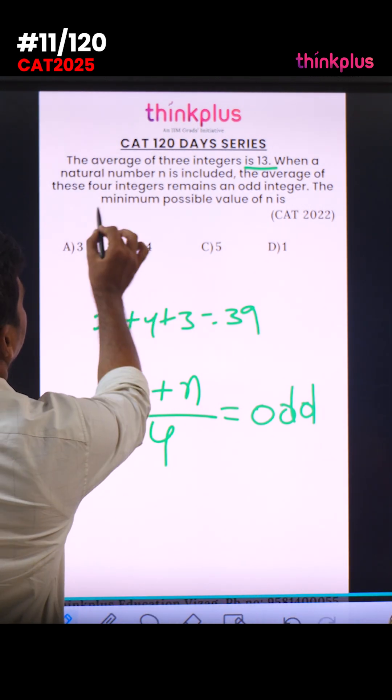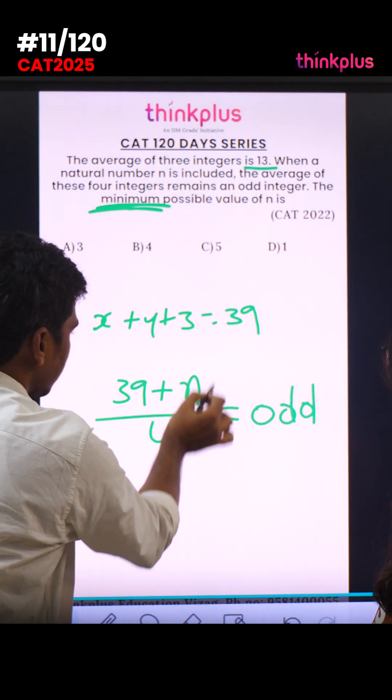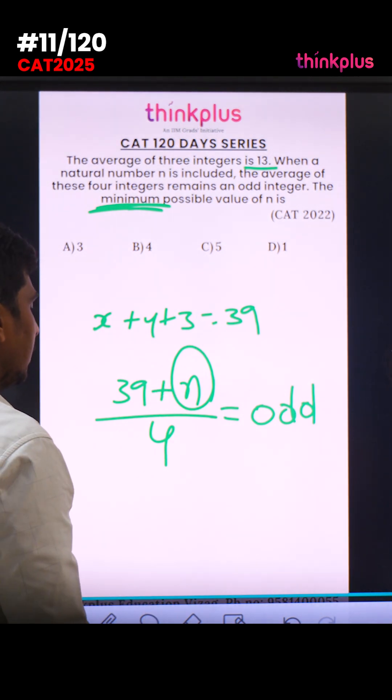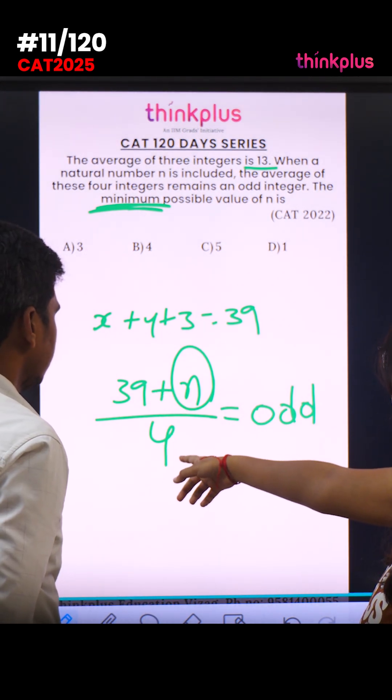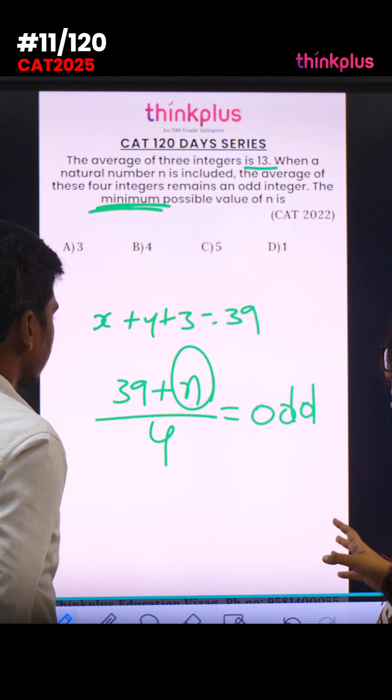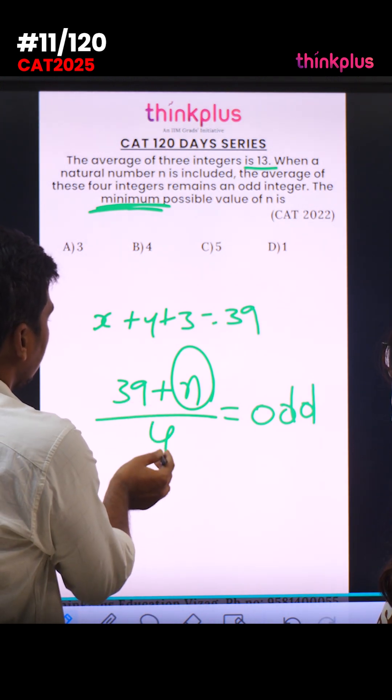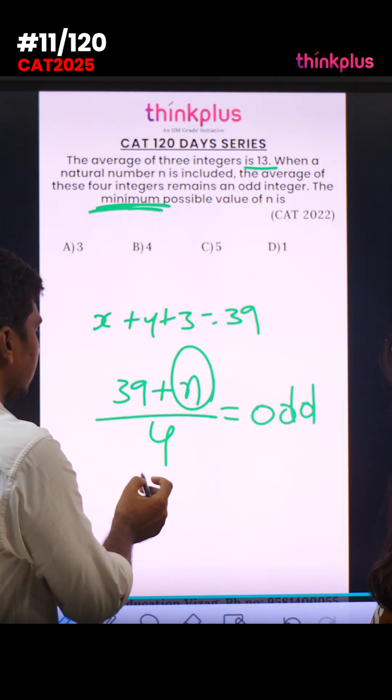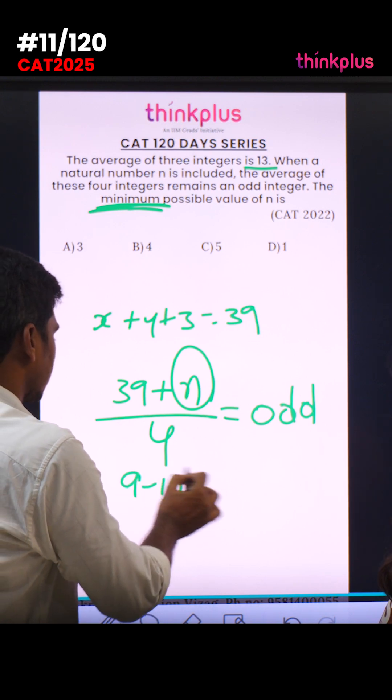The minimum possible value of n. So minimum equals n. 39 by 4 is 9 point something. 10 point something equal to 10.